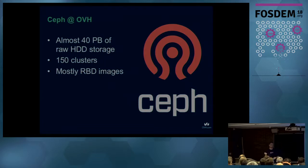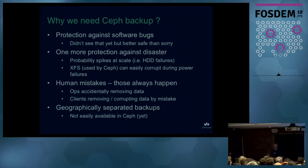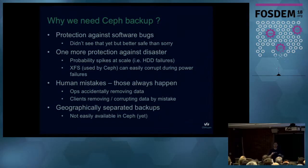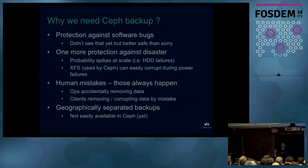So if we have all these benefits of Ceph — three copies — why do we need backups? We could consider it a backup, but better safe than sorry. We can always find some kind of software bug we don't know about, and bugs can happen at the Ceph layer but also lower in the stack. For instance, a Linux kernel bug in the filesystem layer could cause data corruption, or firmware on hard drives could behave unexpectedly.